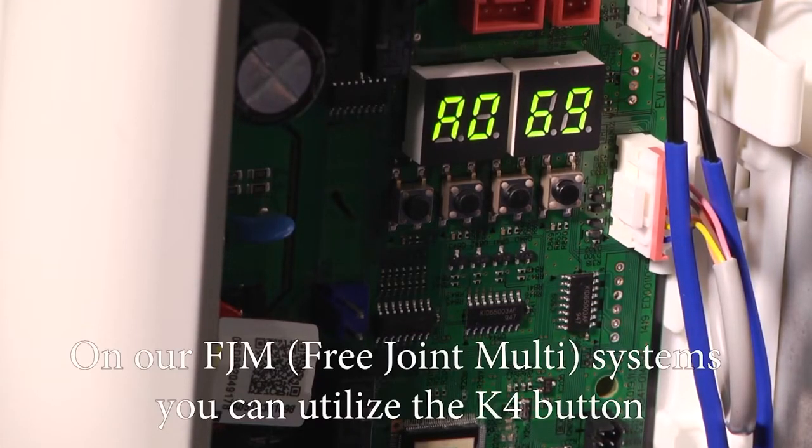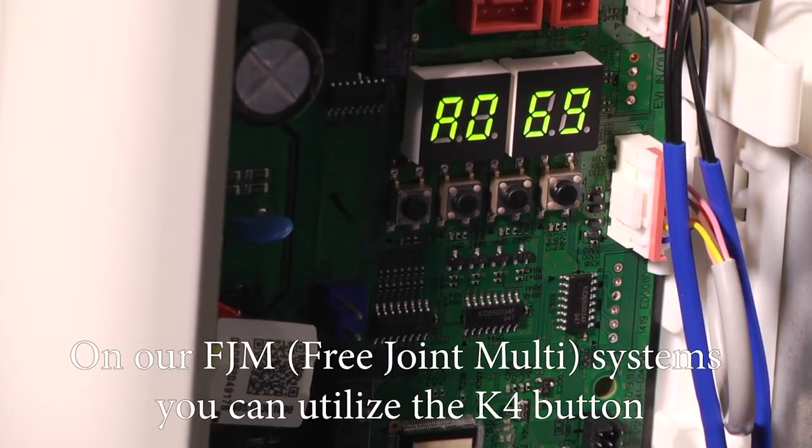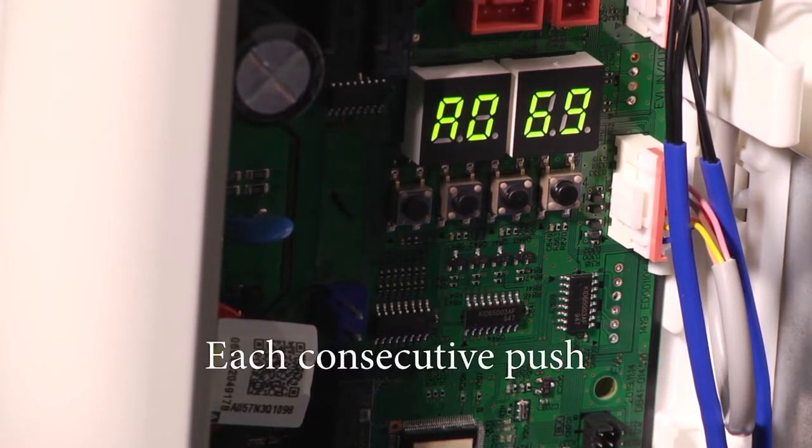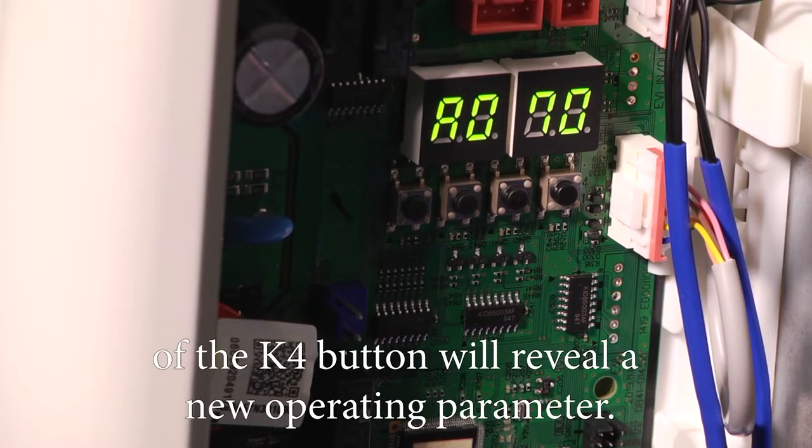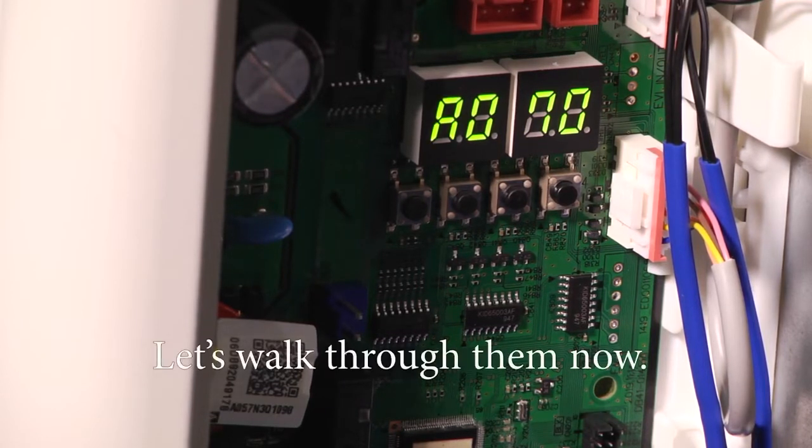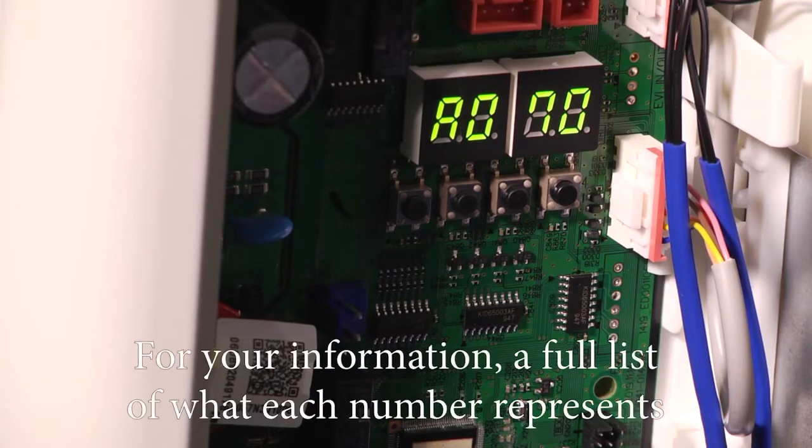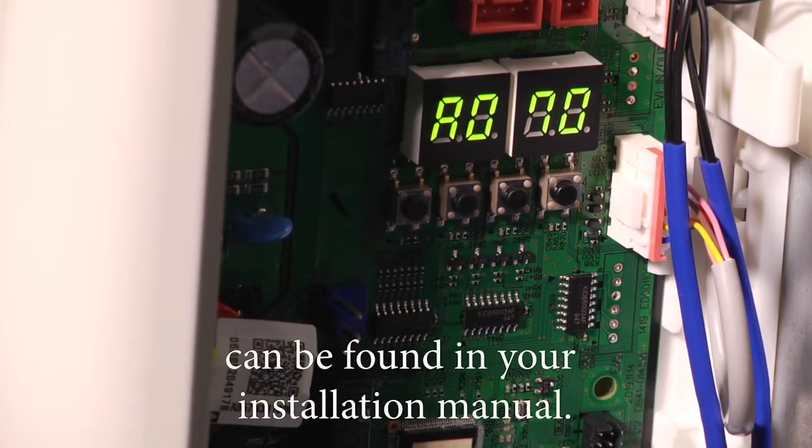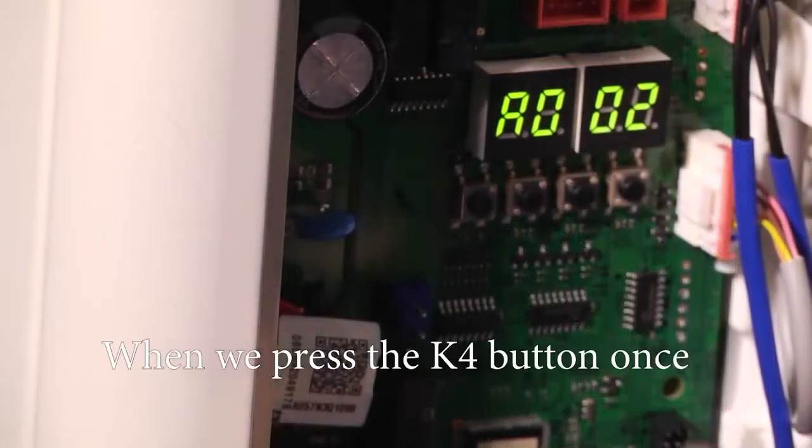On our FJM free joint multi systems, you can utilize the K4 button to observe the operation of the system. Each consecutive push of the K4 button will reveal a new operating parameter. Let's walk through them now. For your information, a full list of what each number represents can be found in your installation manual.